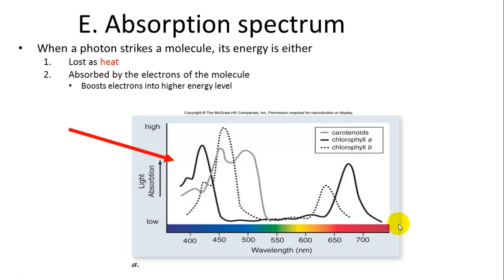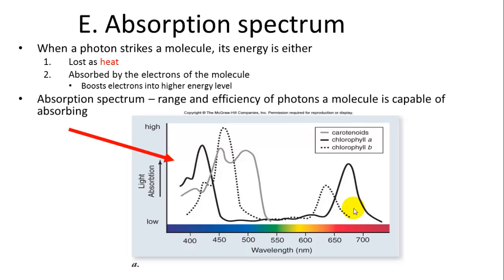The absorption spectrum is the spectrum of light used by photosynthesis for energy. When a photon strikes a molecule, it can either be lost as heat or be absorbed by electrons, boosting them to a higher energy level. The absorption spectrum is the range and efficiency of photons a molecule is capable of absorbing.